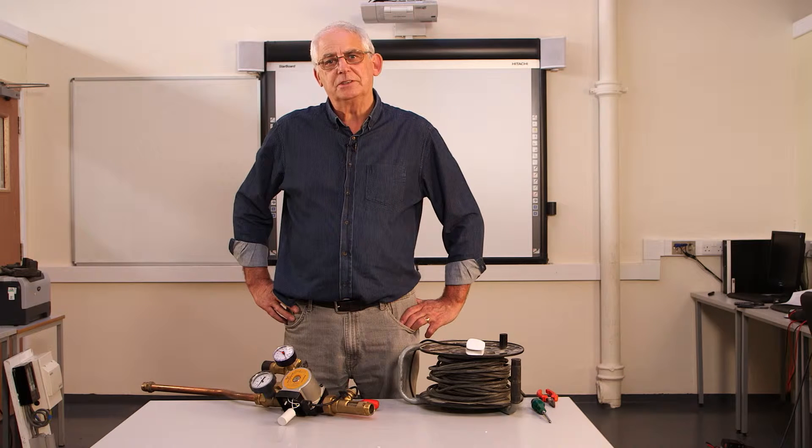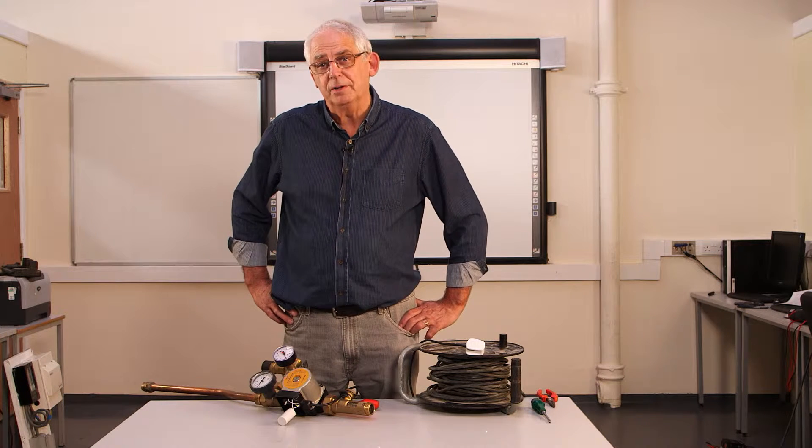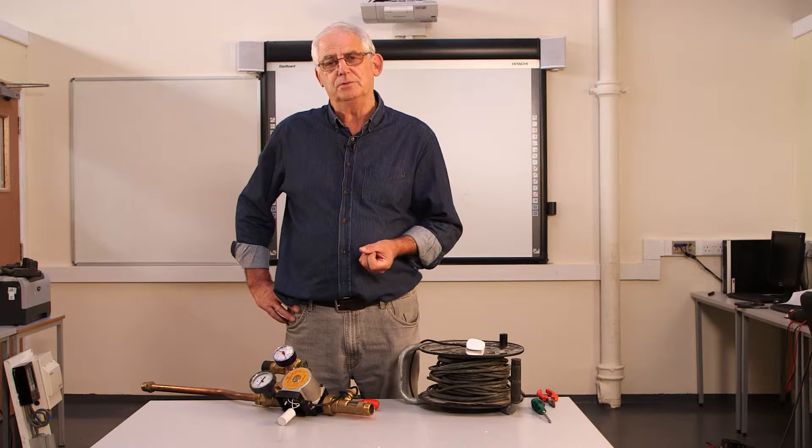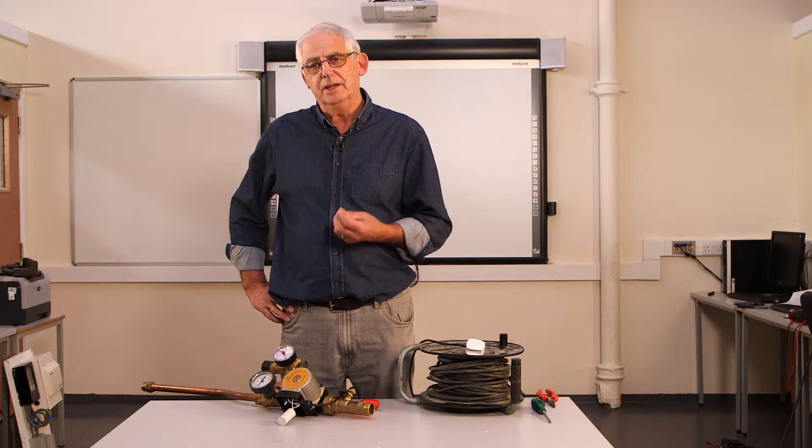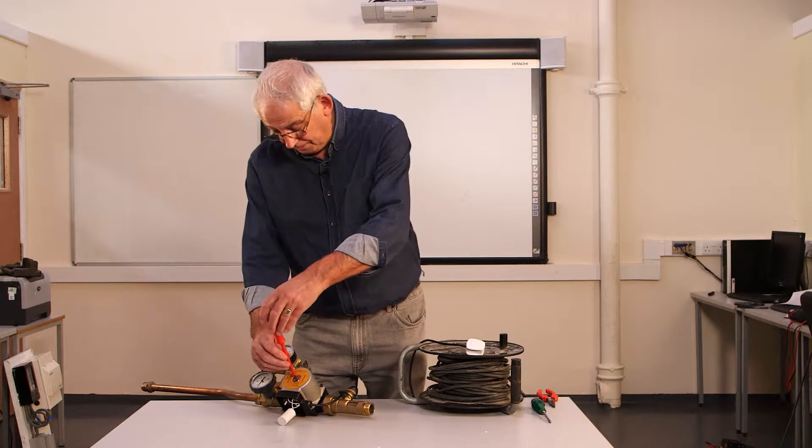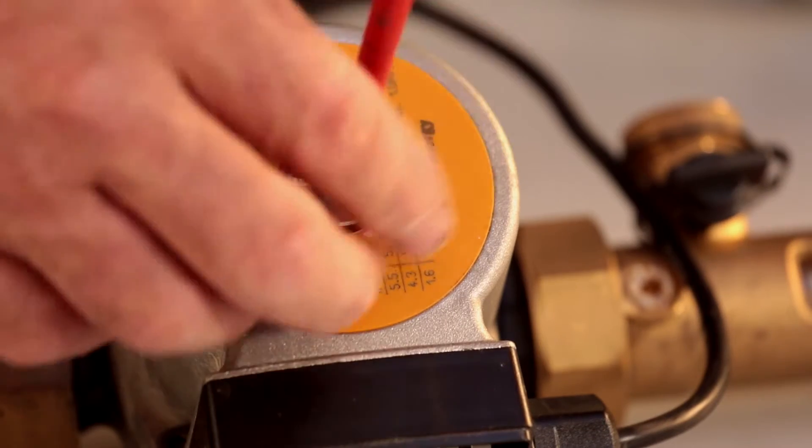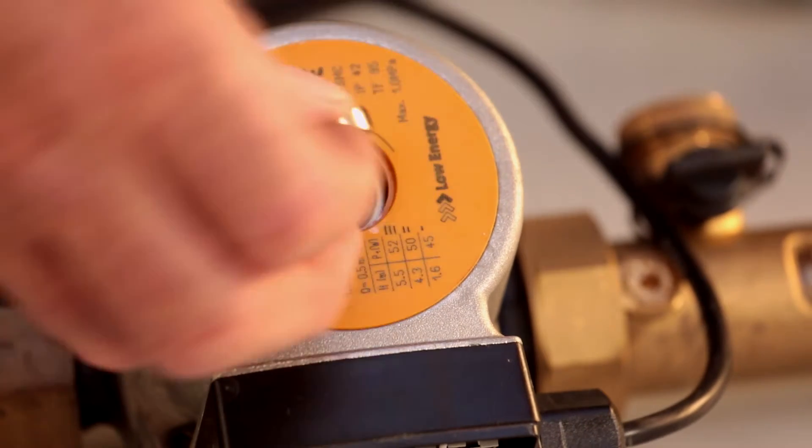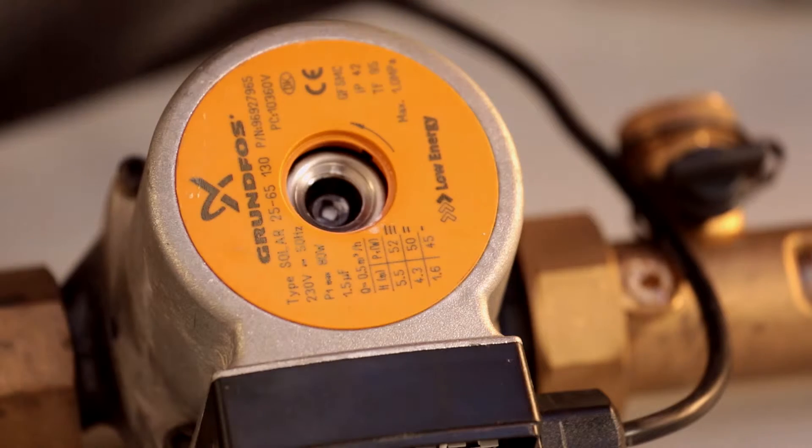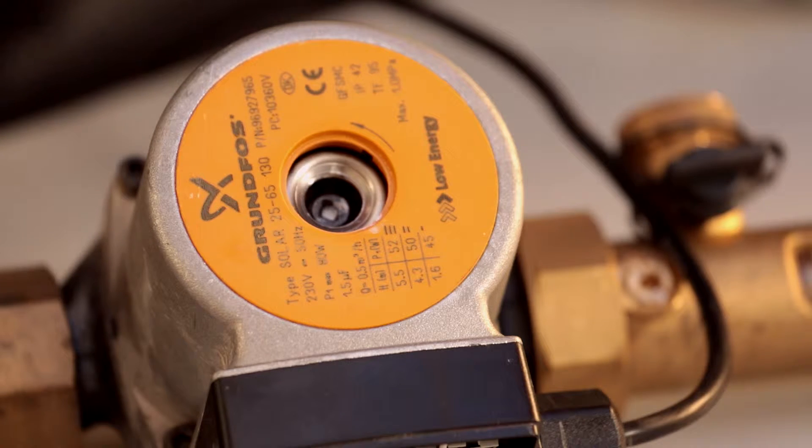Very often it's because they've been standing still during the summer months and the bearing and the seals have just corroded slightly and the motor stuck. Really all it needs is for the top of this to be taken off, give the spindle inside a little twist and the motor will run perfectly well.